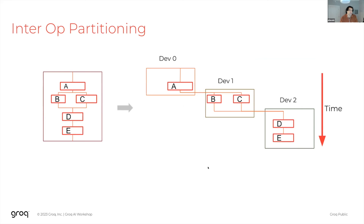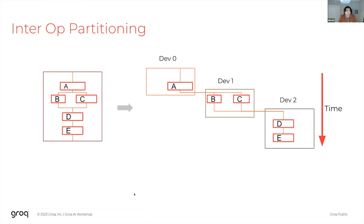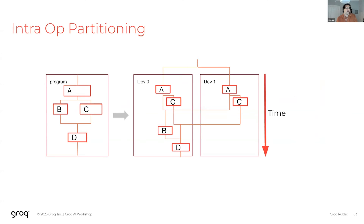There are two forms of partitioning. The first is interop partitioning: we split the original compute graph into subgraphs and run different subgraphs on different chips, passing data-dependent tensors over C2C. This helps with fitability by spreading constants across chips, and improves throughput through pipelining — device zero can start working on the next inference as soon as it hands off C2C communication to device one, so devices zero, one, and two work in parallel on consecutive inferences.